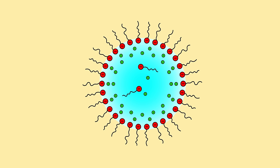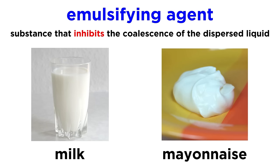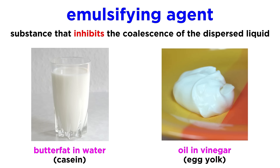But sometimes, emulsions will coalesce and separate from the other liquid. To combat this tendency, an emulsifying agent can be used. This is a substance that inhibits the coalescence of the dispersed liquid. Milk and mayonnaise are examples of emulsions. Milk is an emulsion of butterfat in water, with a protein called casein acting as the emulsifying agent. And mayonnaise is an emulsion of oil in vinegar, with egg yolk components acting as the emulsifying agents.